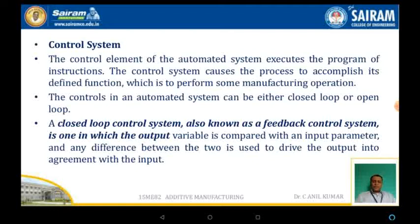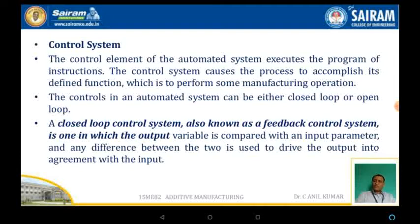In a feedback control system, the output parameter is compared with respect to the input parameter. The input and output parameters are compared, and then the regulations can be done by using the devices. In this system, the output variable is compared with the input parameter, and if there is any difference between the two, it is used to drive the output into agreement with respect to the input.